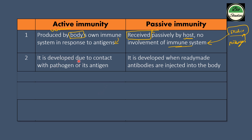Active immunity is developed due to contact with the pathogen or its antigen. The immune response is directed by the pathogen or its antigen. We need to develop direct contact with the pathogen or antigen, and ready-made antibodies are involved in passive immunity.